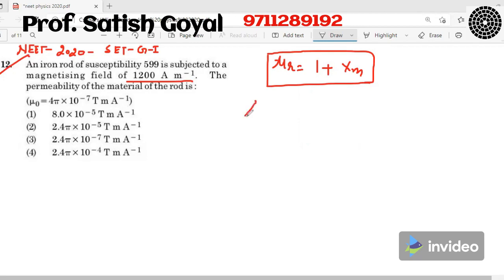So given that the susceptibility of the iron rod is 599, and it is subjected to a magnetic field 1200 ampere per meter. So magnetizing field is given.